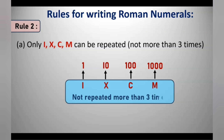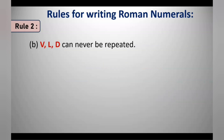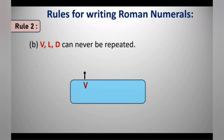No symbol is repeated more than 3 times. The next point under Rule 2 is that V, L, and D can never be repeated. That is, V (5), L (50), and D (500) cannot be repeated at all.